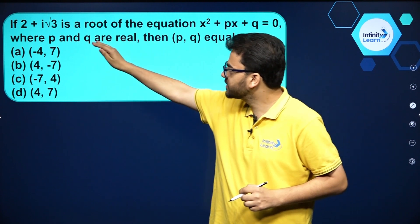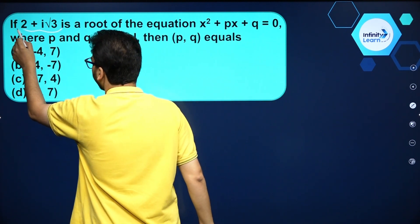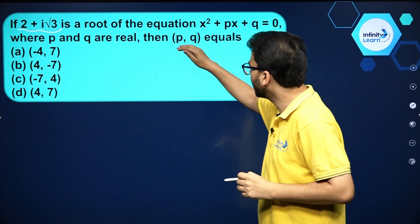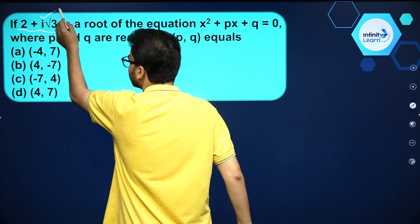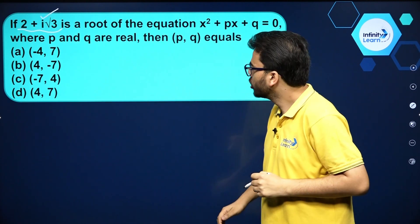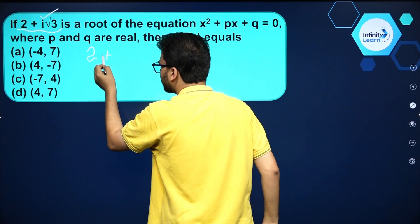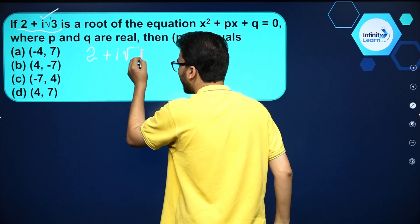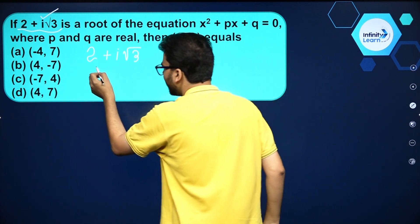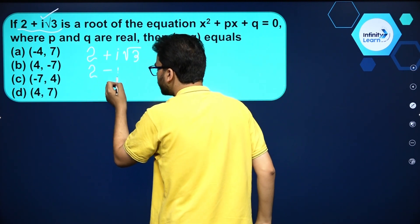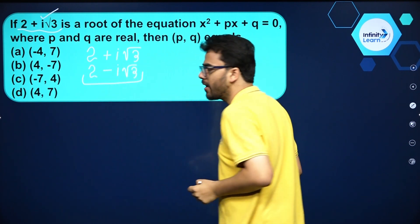One of the roots is given as 2 + i√3, and we have to find the value of p and q. The 'i' here is iota. When roots are of this imaginary form, if one root is of this form, automatically the other root will be its conjugate — so it will be 2 - i√3.